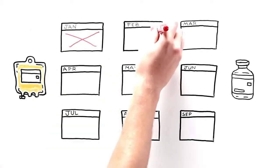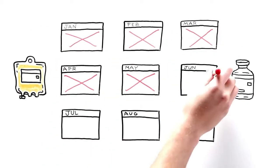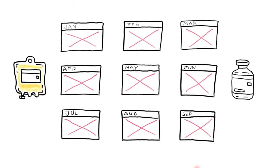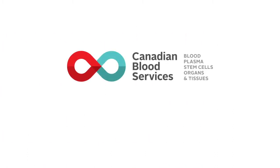The entire process, from donation to finished product, can take nine months or more. For more information, visit blood.ca.